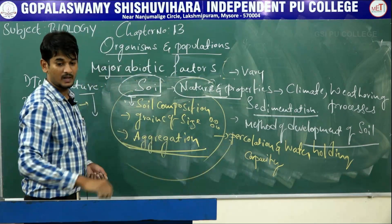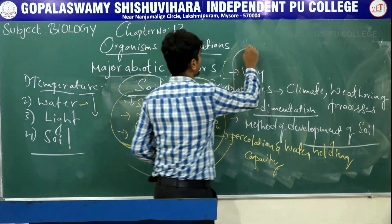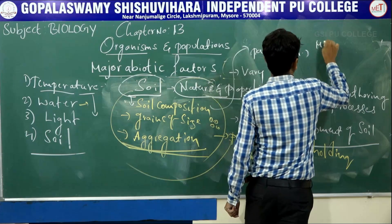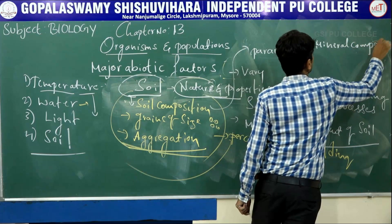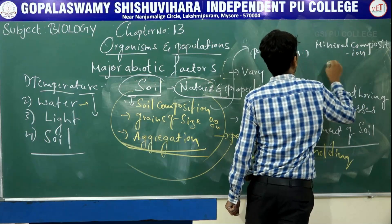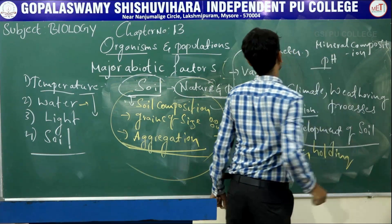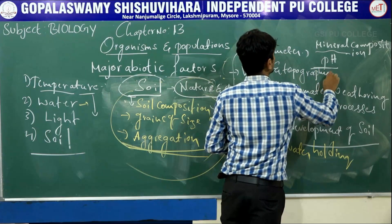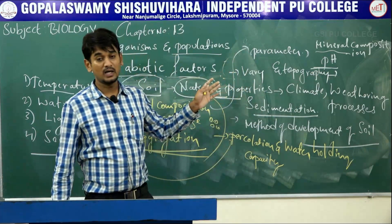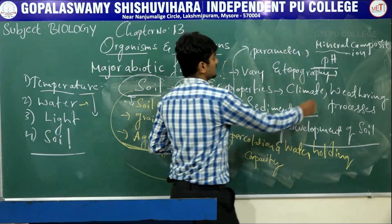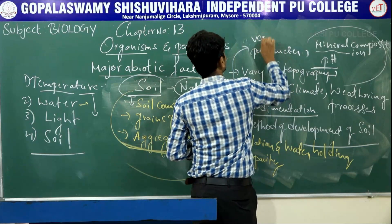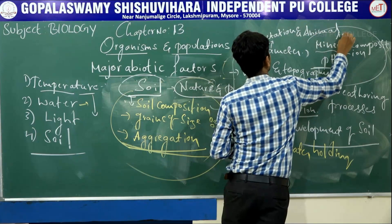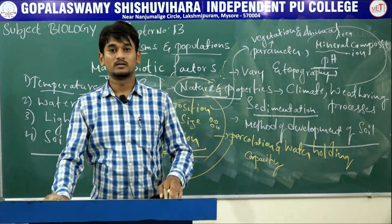Along with these characteristics, some additional parameters — such as mineral composition, pH, and topography — determine the vegetation and animals found in an area. These are all the major abiotic factors we discussed in this session. Thank you.